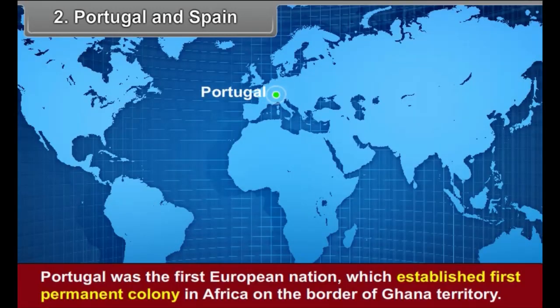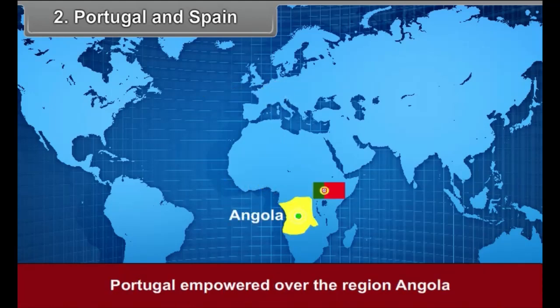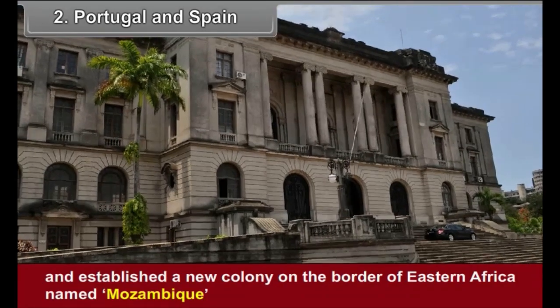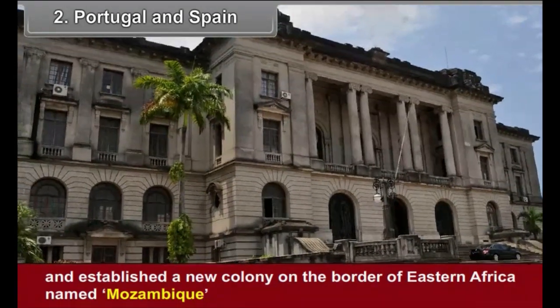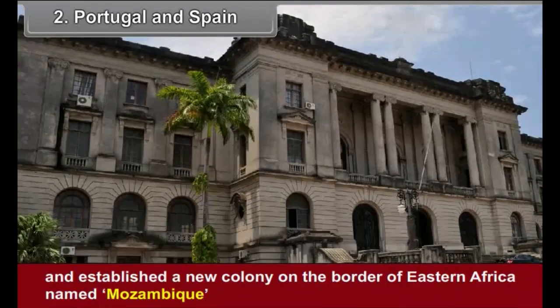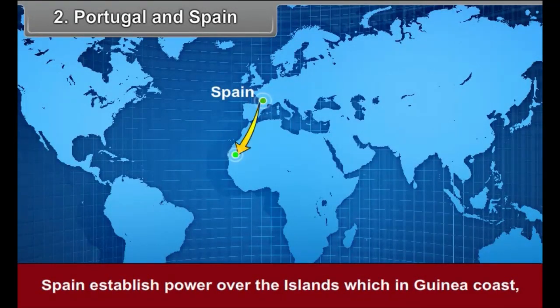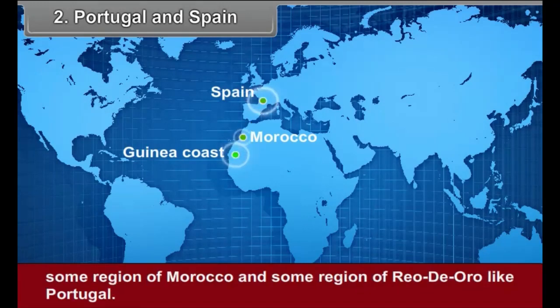Second, Portugal and Spain: Portugal was the first European nation to establish a permanent colony in Africa on the border of Ghana territory. Portugal also gained power over the region of Angola and established a new colony on the border of Eastern Africa named Mozambique. Spain established power over the islands on the Guinea coast, some regions of Morocco and some regions of Rio de Oro, similar to Portugal.